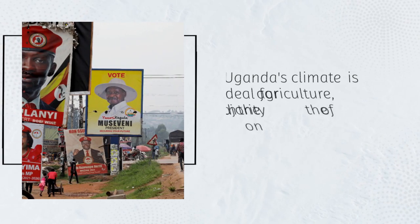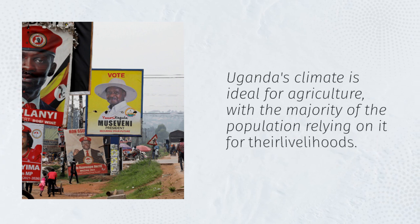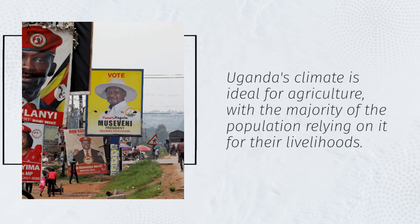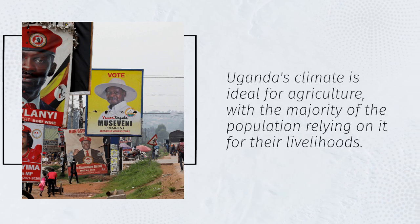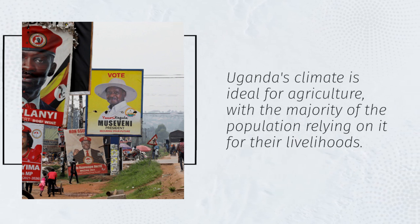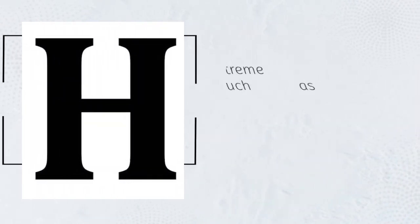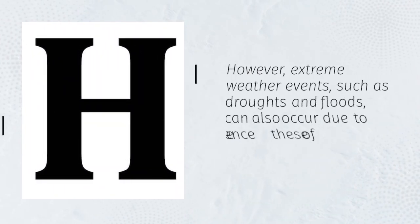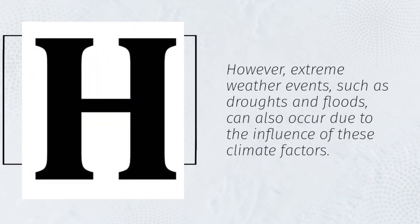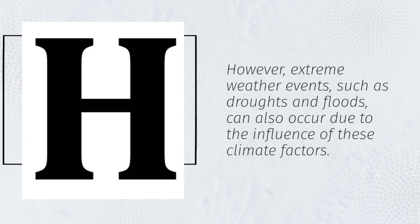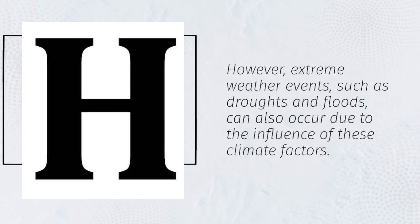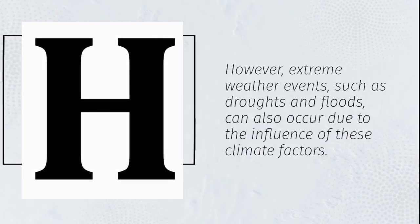Uganda's climate is ideal for agriculture, with the majority of the population relying on it for their livelihoods. However, extreme weather events, such as droughts and floods, can also occur due to the influence of these climate factors.